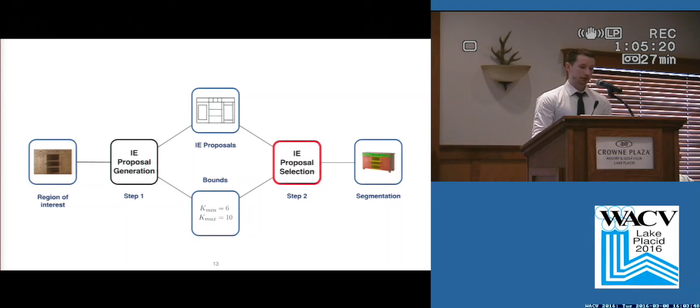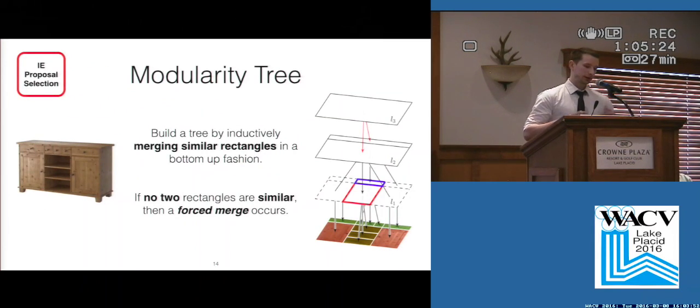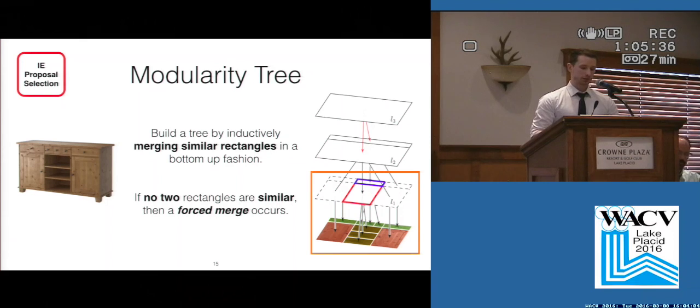For any selection of proposals, we can build what we call the modularity tree. Looking at the right, in the bottom layer we first merge the three shelves and three smaller doors into the red and blue rectangles, respectively.